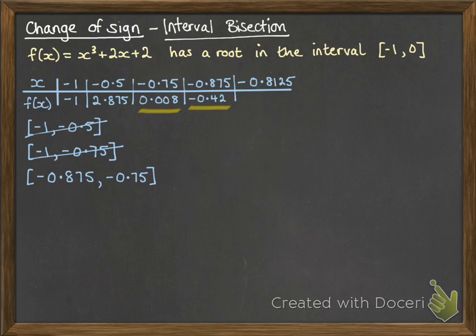So once again we go halfway between. Work out that one. That's negative. So again that replaces the bottom of our interval. And you carry on as much as you need to.